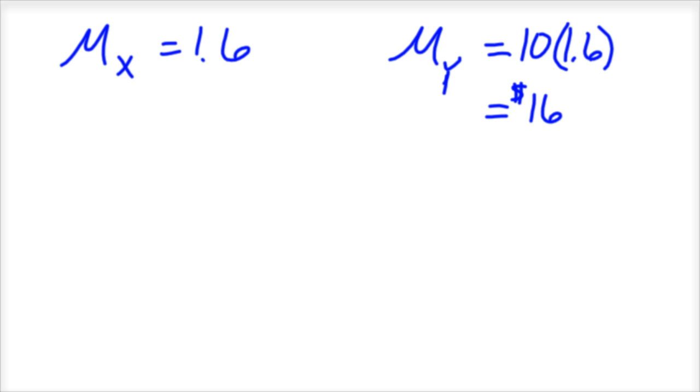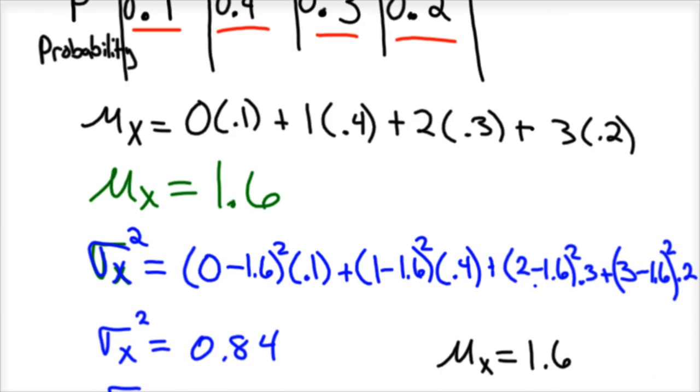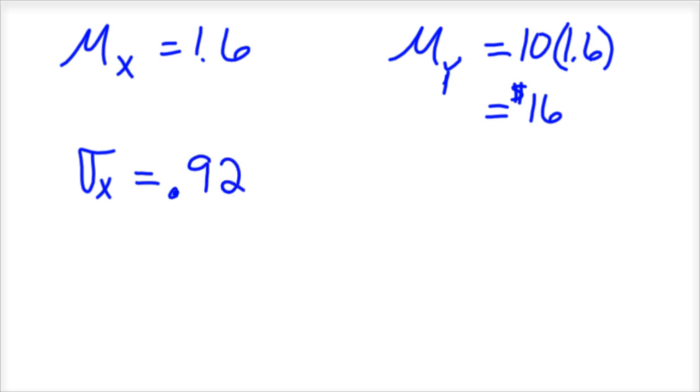Or he can expect $16 per cab ride. And then our standard deviation of X was 0.92. So our new standard deviation, with the $10 per rider increase, or bonus, is just going to be the absolute value of 10, which is still just 10, times 0.92. So our standard deviation is going to be 9.2. And so that's if it was multiplication.